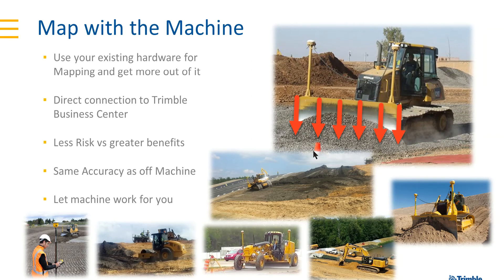What I really want to focus on is mapping with the machine. Most people, when they think of machine guidance or automatic machine control, think it's only used for pushing dirt or paving — moving material around the site. What we fail to remember is that it's also a survey device. Whether you've put it on a dozer, compactor, grader, or excavator, it is RTK — it's the same accuracy you're going to get from your base and rover.